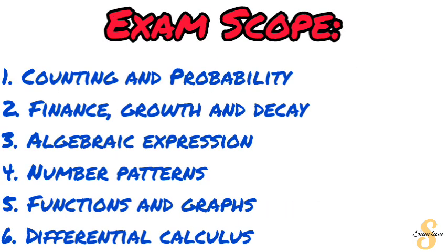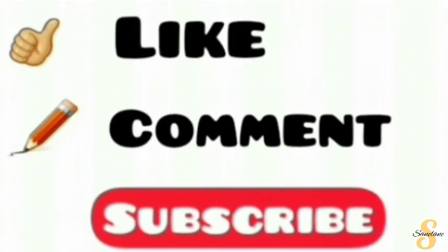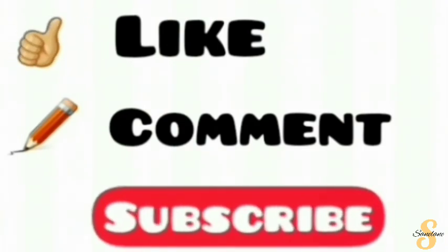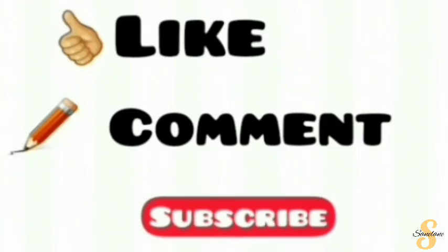In total, Paper 1 covers six topics: first, counting principles and probability; second, finance growth and decay; third, algebraic expressions including equations and inequalities; fourth, number patterns; fifth, functions and graphs; and sixth, differential calculus. That concludes your Paper 1 preparatory exam overview. Be sure to click the like button and subscribe to the channel, and leave any questions in the comment section below.